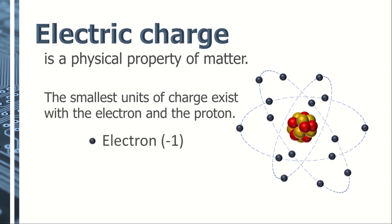Electron carries one unit of negative charge, and proton carries one unit of positive charge. Therefore, objects that have excess amount of proton, or more appropriately lacking in electrons, are said to be positively charged. The electric charge causes objects to have an attractive or repulsive force towards one another. We will further discuss this force later in this presentation.